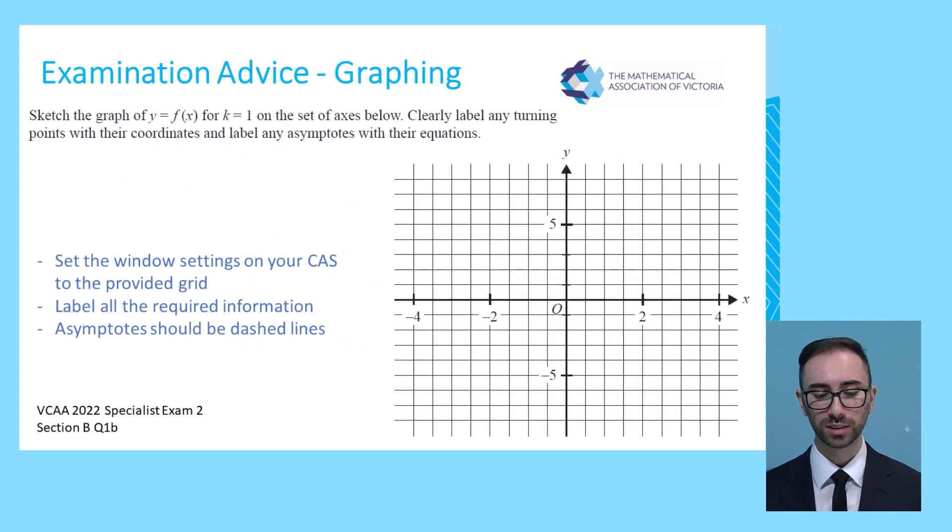An example here taken from last year's exam. This is from exam 2. In this question here, students are asked to clearly label any turning points with their coordinates and label any asymptotes with their equations. When seeing such a question, we can set our window settings on our CAS device to the grid provided in the question to help us sketch the shape correctly. From there, we need to label all the appropriate information, such as the turning points, as well as the asymptotes, and also ensure that your asymptotes are dashed lines, not solid lines.